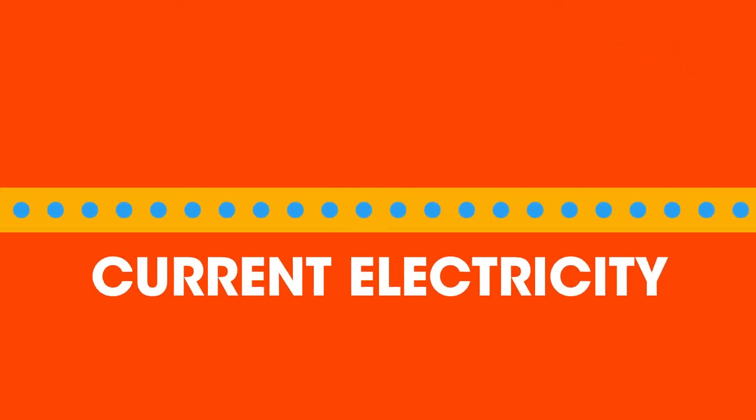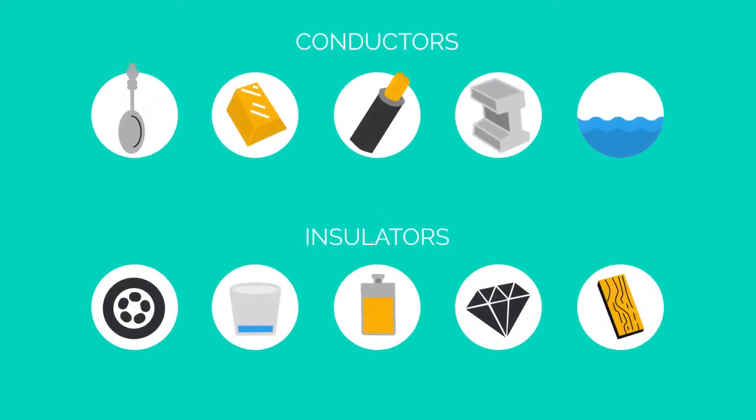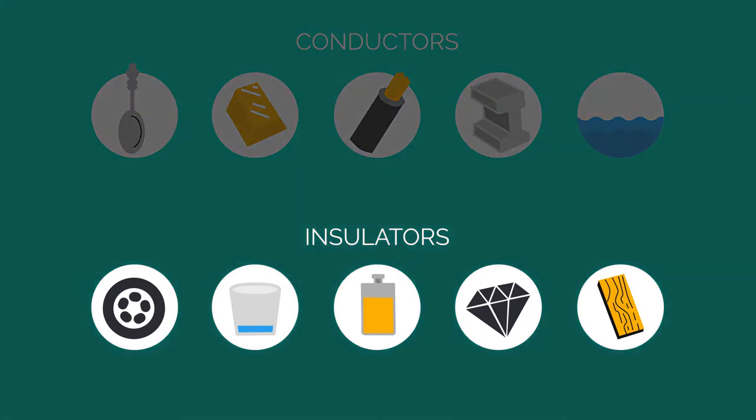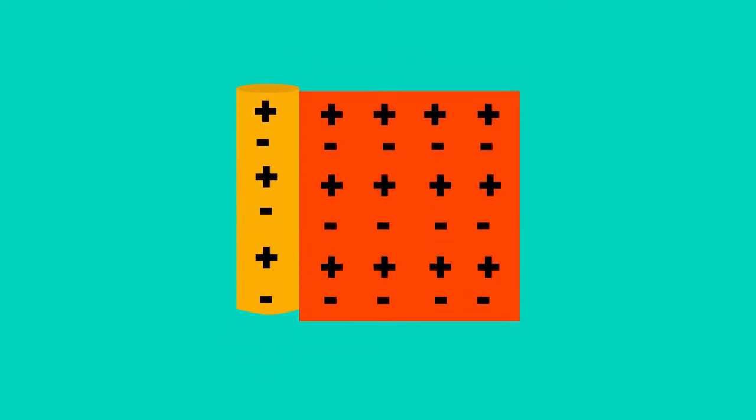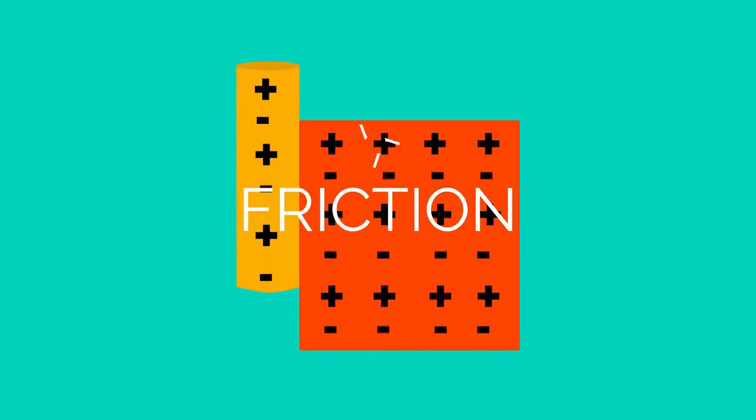Metals allow the flow of electrons in current electricity, but here we are dealing with all the other materials that are not metals and are insulators. If two different non-metal insulators, a cloth and a glass rod for example, rub against each other, then both may become charged by friction. As they rub together, electrons may be removed from the surface of one and deposited on the surface of the other.